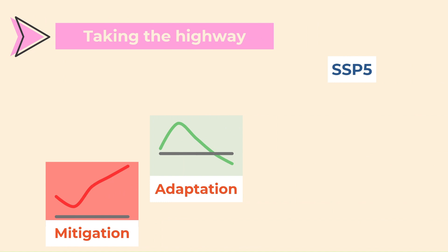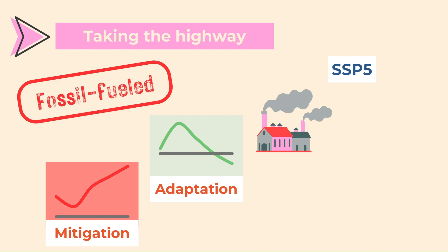SSP5, or taking the highway, is based on fossil fuel development. In this scenario, there are high challenges to mitigation and low challenges to adaptation. Energy consumption linked to fossil fuels is increasing, which allows for innovation and progress. Lifestyles are energy intensive. Many solutions are being developed to manage social and environmental problems.